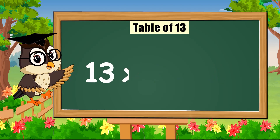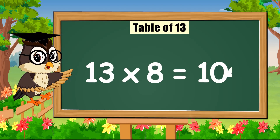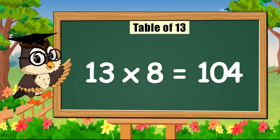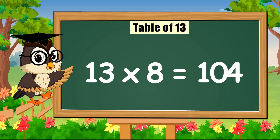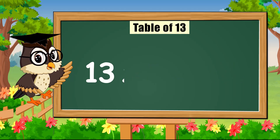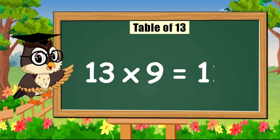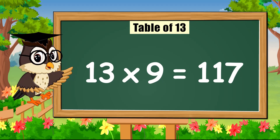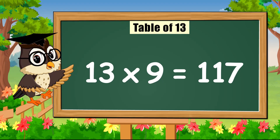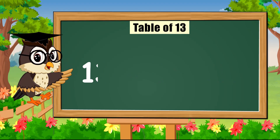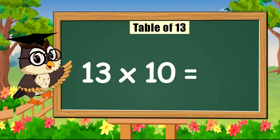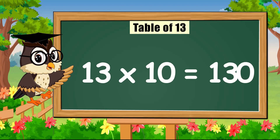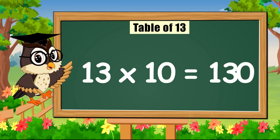Thirteen times seven is ninety-one. Thirteen times eight is one hundred and four. Thirteen times nine is one hundred and seventeen. Thirteen times ten is one hundred and thirty.